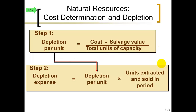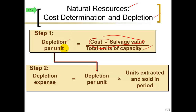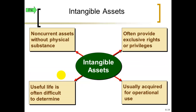For natural resources, the depletion calculation is similar to the units of production method: take original cost minus salvage value, divide by the total expected units to be extracted over the resource's lifetime to get a depletion rate per unit. Multiply by the units extracted or sold during the period to get depletion expense.